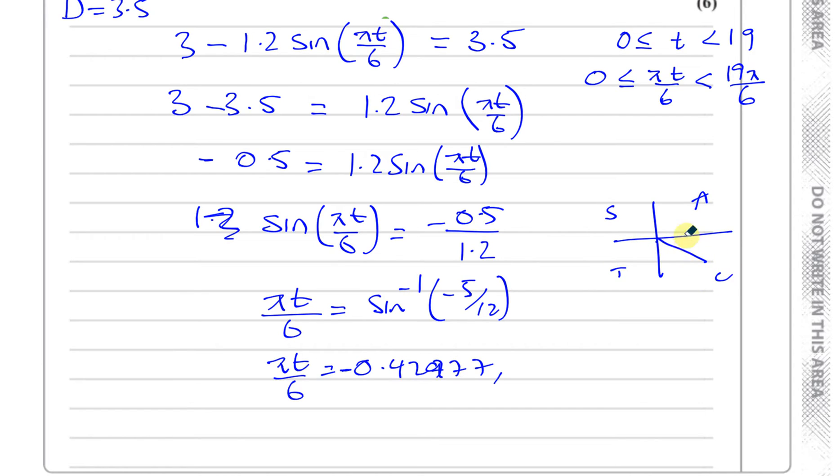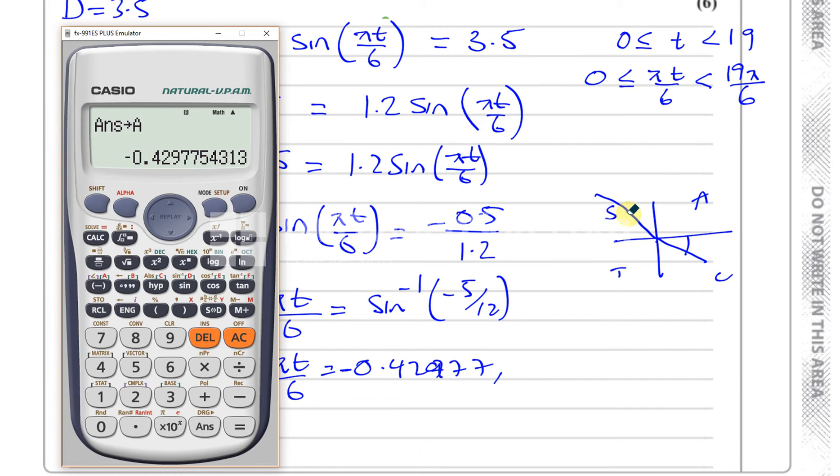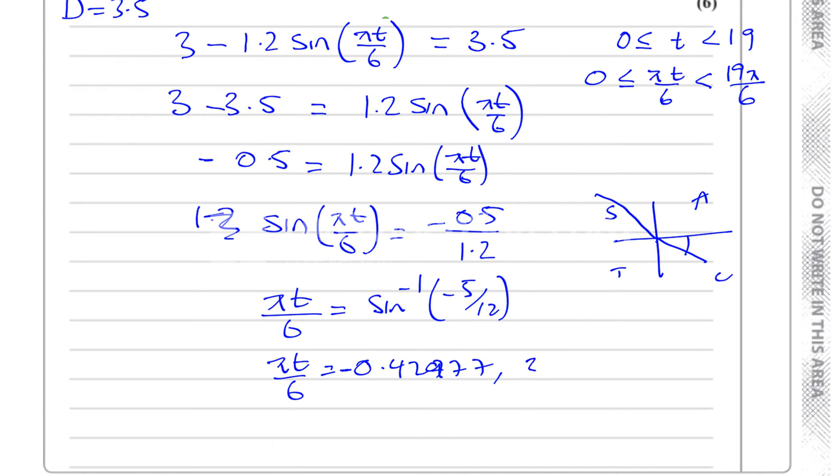So it represents a solution here somewhere. That's the first solution, which is not going to be included because we have to be bigger than 0. But what we're going to do is we're going to do 180 minus this to find another solution, which is going to be the solution over here. So if we do 180 minus this, it's going to give us that solution. So I'm going to press shift pi.